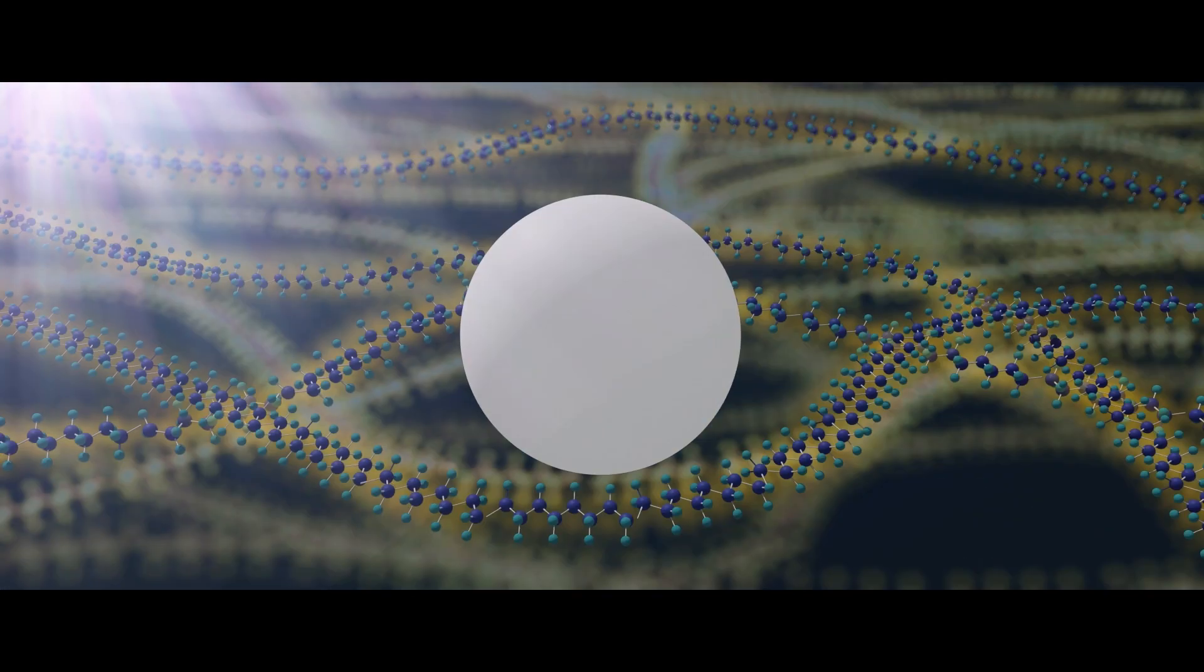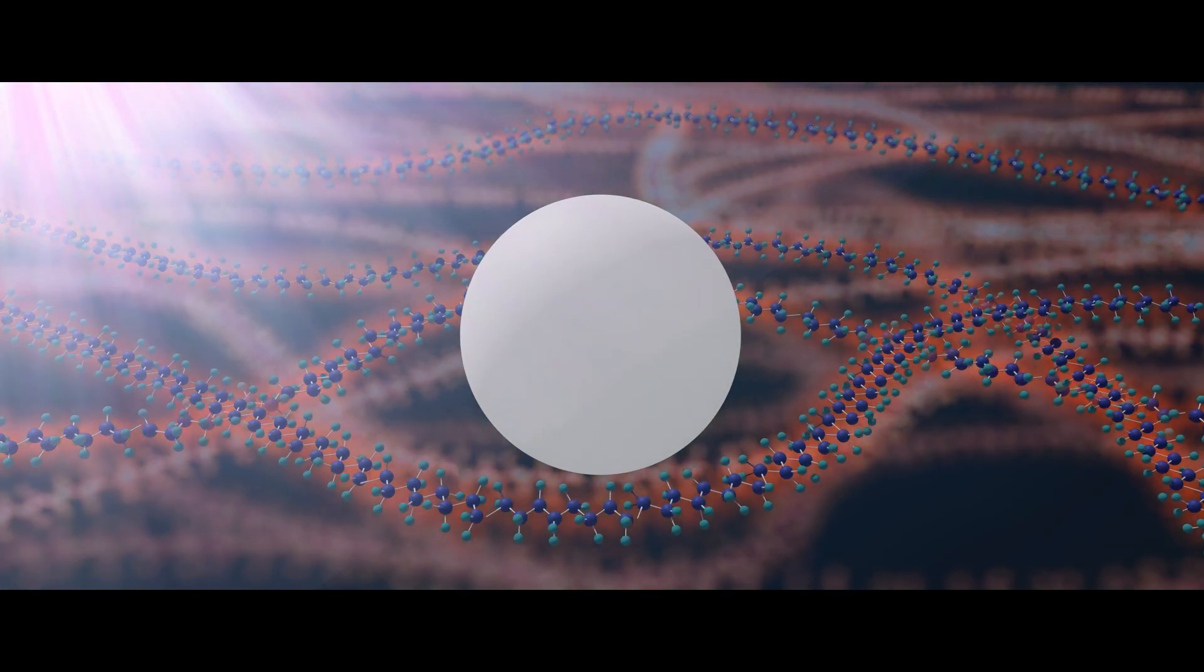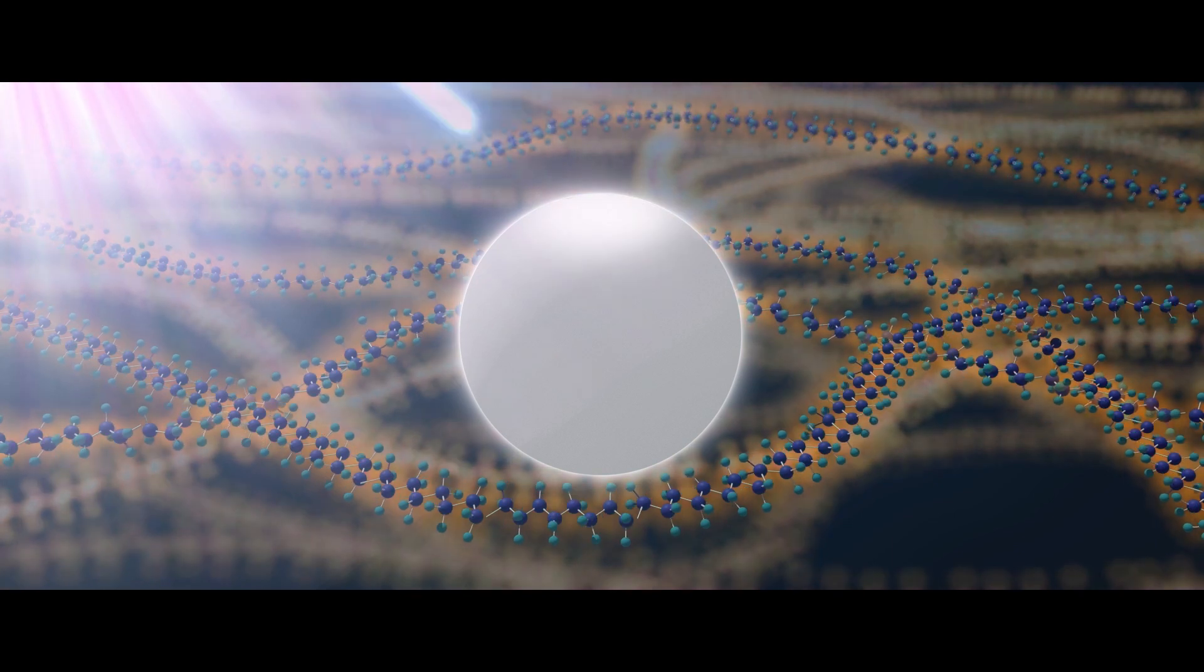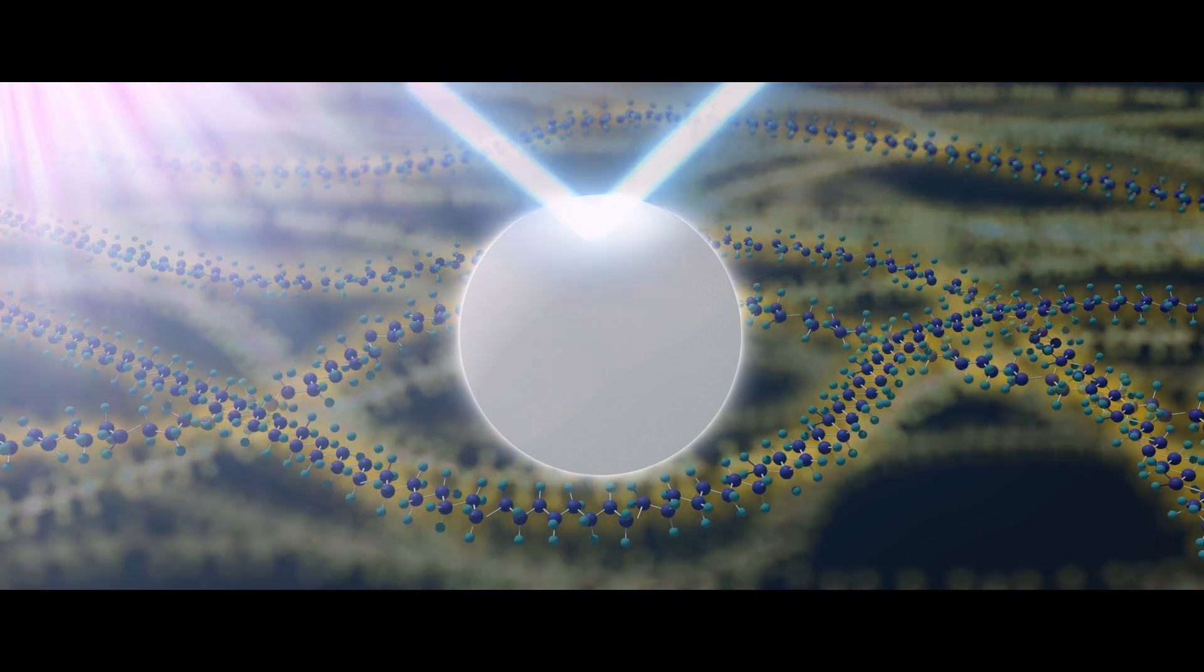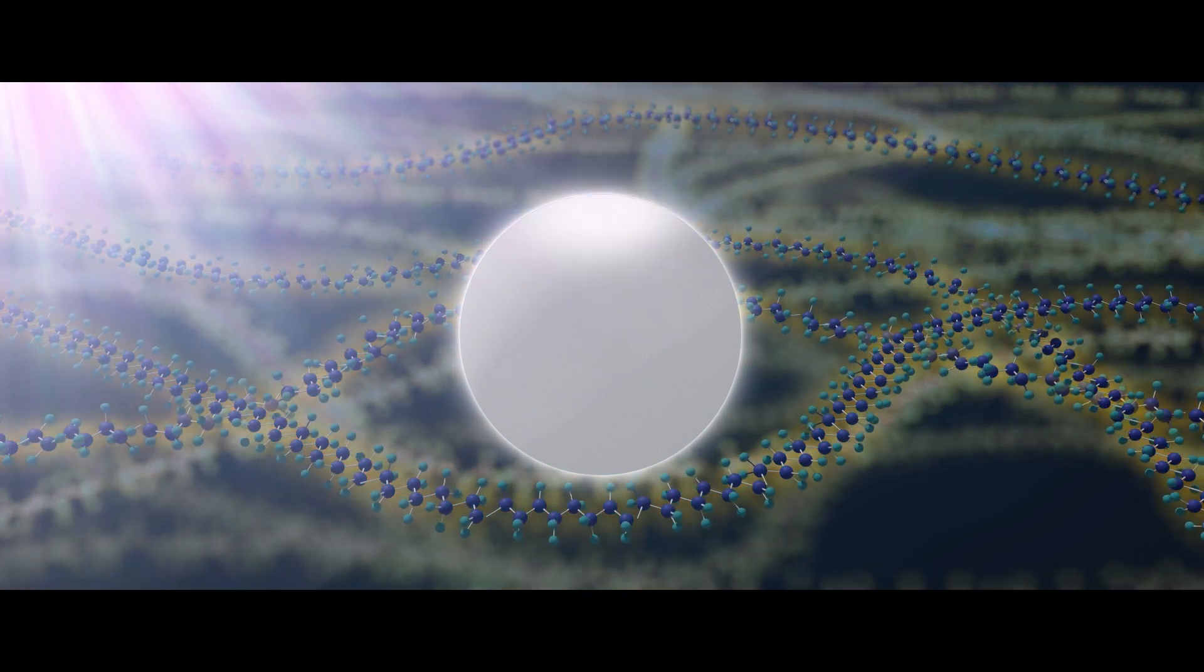The first type of particle has the function of reflecting near-infrared rays in the sunlight that cause molecular vibrations in resin, thereby suppressing the temperature rise of the paint.